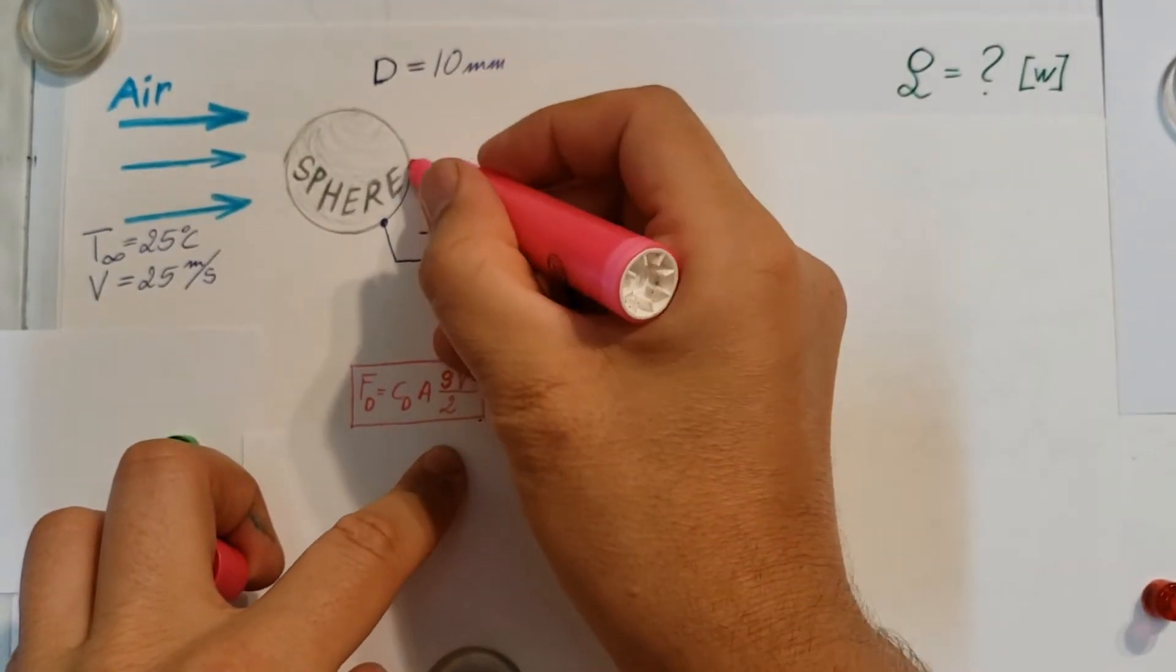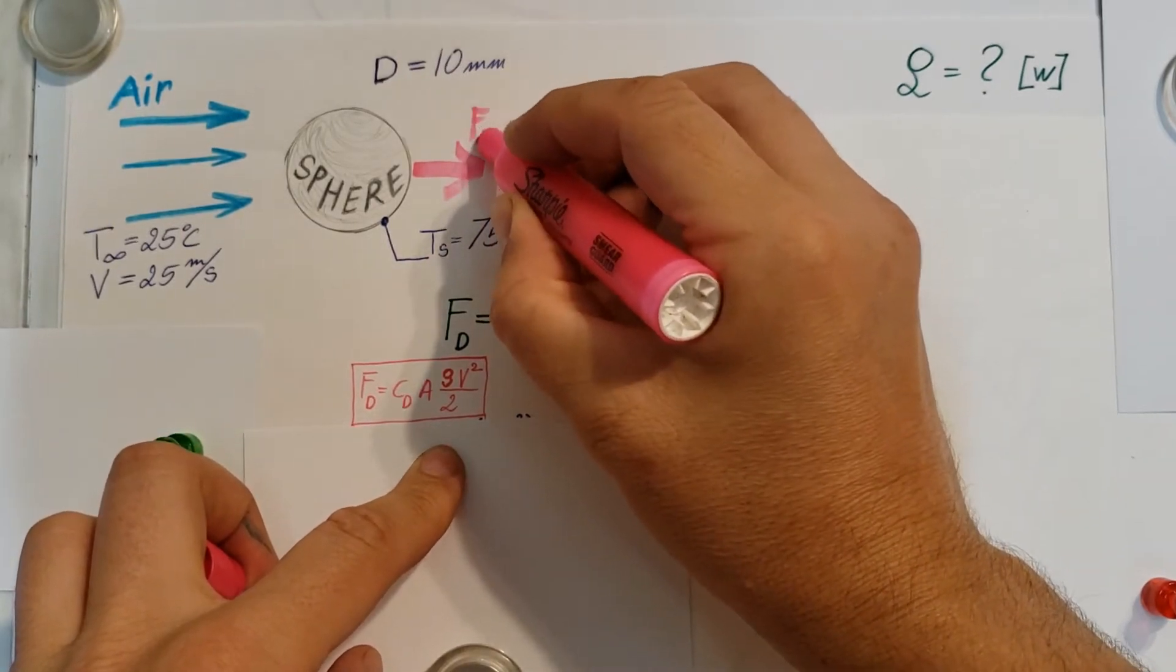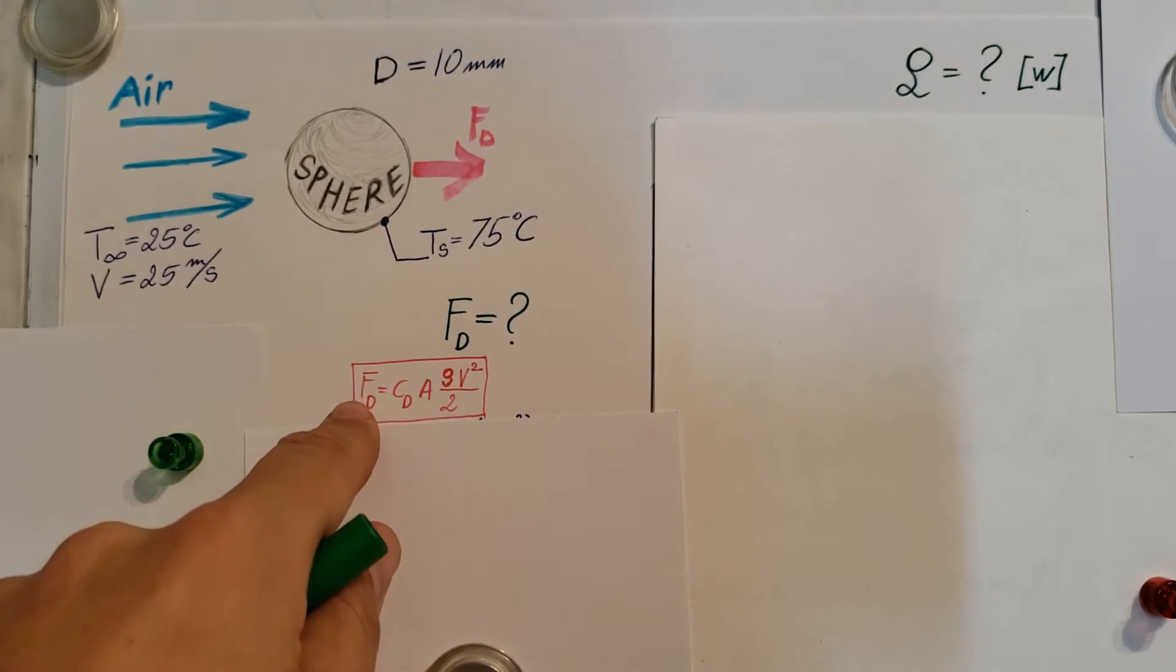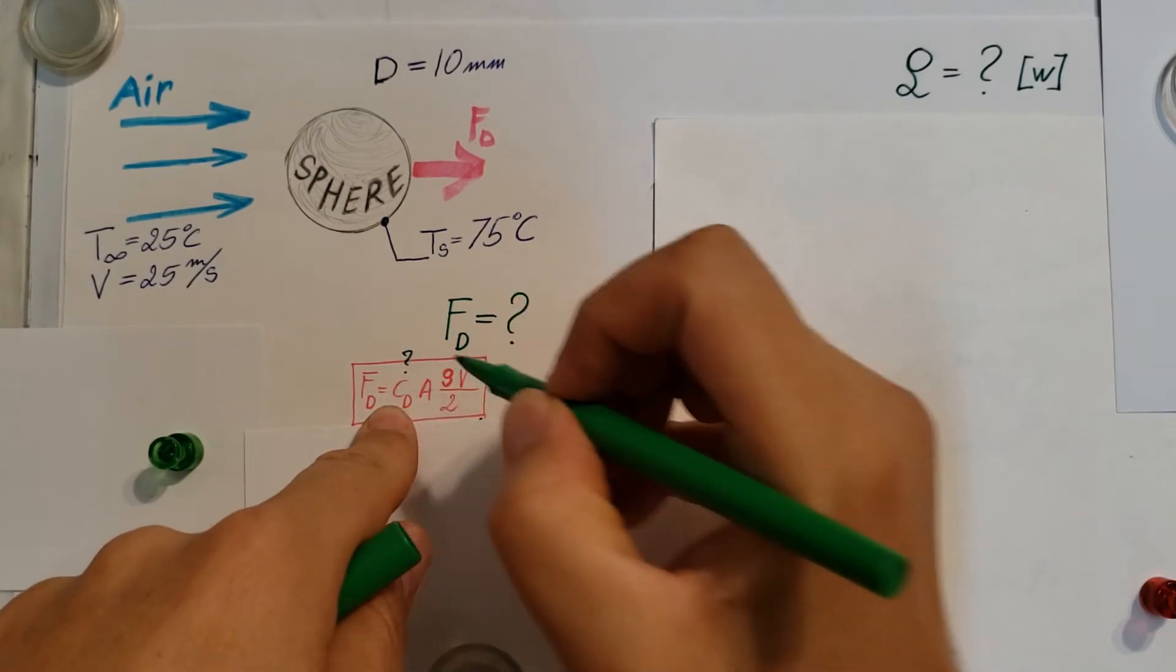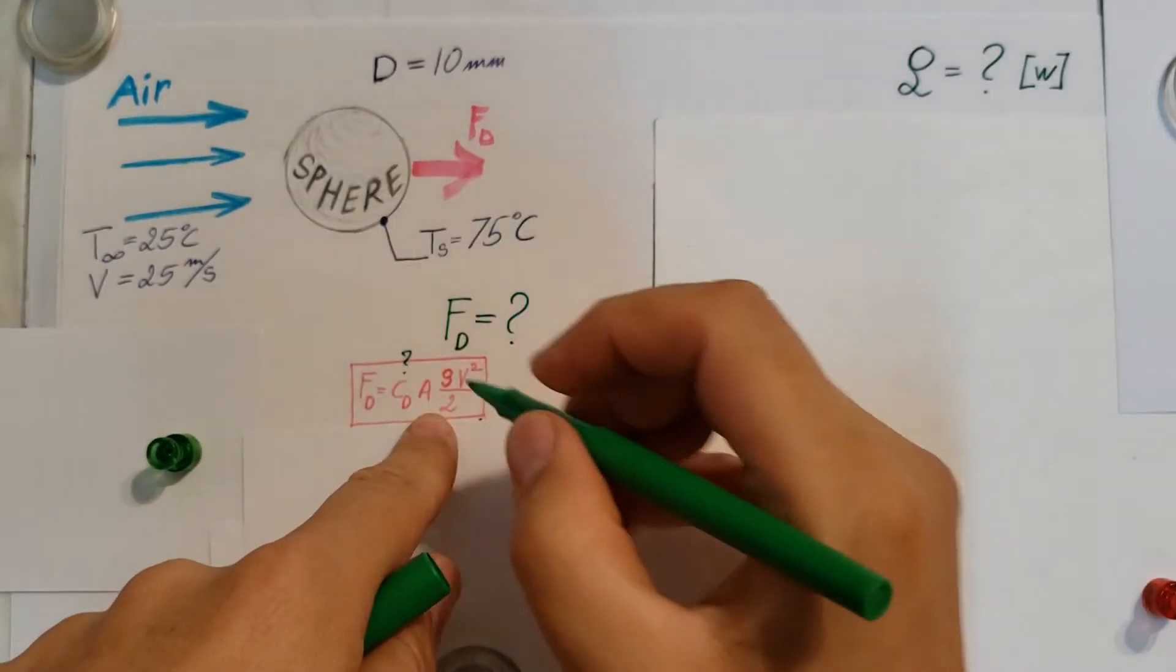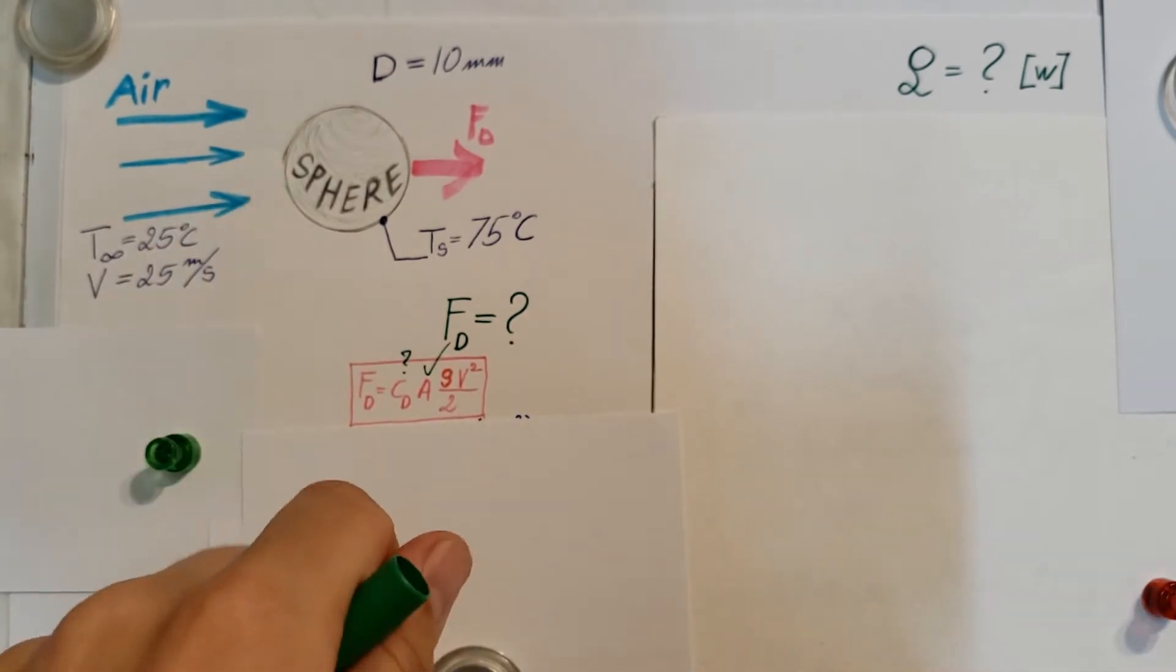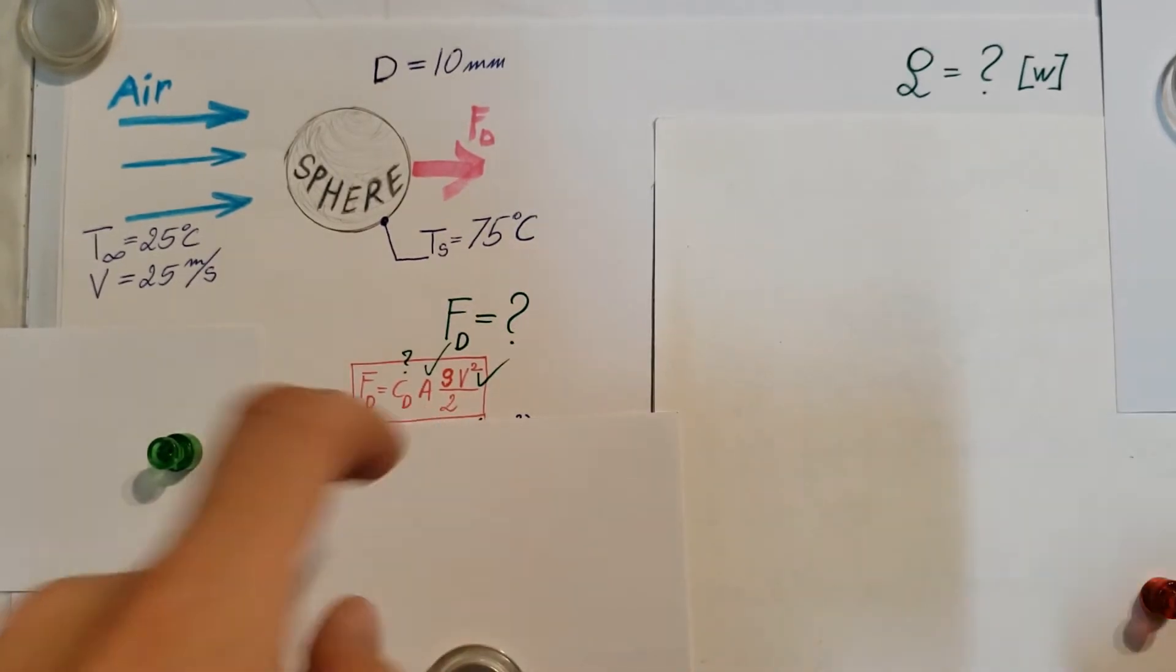Let's put the force here that would be acting on this sphere so we have it marked. Now let's see what we have. Do we have everything in this formula or not? We are looking for FD drag force. Our drag coefficient we don't have it. Our area, yeah we have that one. Our density we're going to have to look that up in our property tables. Velocity we have that, good.